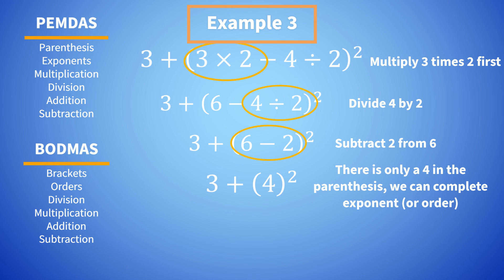Now, since we only have four inside the parentheses, we can now complete the exponent or order. This gives us 16. Now all we have to do is add three plus 16. Our final answer is 19.